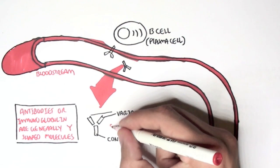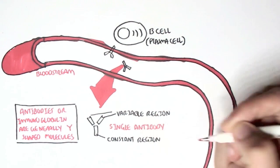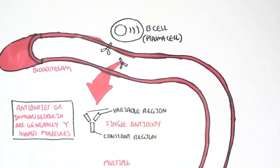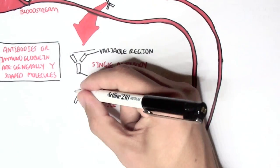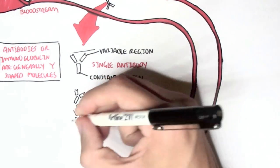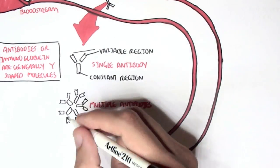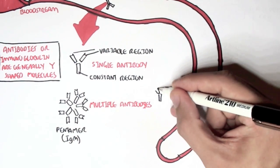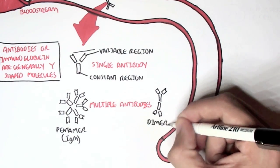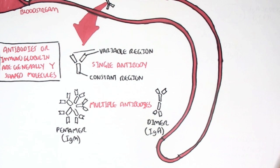This antibody here is a single antibody. However, there are also antibodies that function and form multiple antibodies, such as a pentamer shape — pentamer meaning five antibodies — which is made up of IgM antibodies. There's also a dimer form, meaning two antibodies, made up of IgA antibodies. We'll learn about the different types, IgM and IgA, later on.